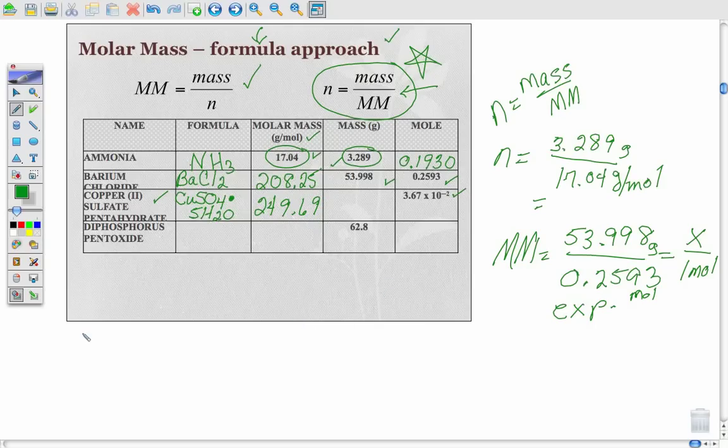Now we can plug into the formula and actually solve for our mass. So 249.69 is going to equal our unknown grams per 3.67 times 10 to the minus 2. And I'm going to go ahead and let you pull out the mathematics for that. You should be able to handle that algebra.